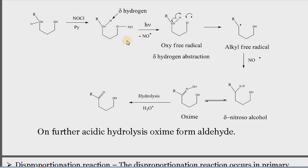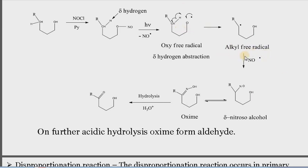During this reaction, carbons at positions one, two, three, and four get converted into either OH, NOH, or a carbonyl functional group. In the first step, photolysis of the O–N bond takes place, one nitric oxide radical is eliminated, and we get an oxy radical. After formation of this oxy radical, hydrogen at the delta position is abstracted and an alkyl radical is formed. The nitric oxide radical then recombines with the alkyl radical to form a delta-nitroso alcohol.